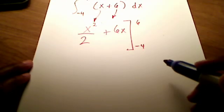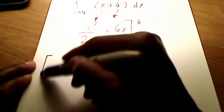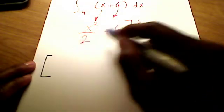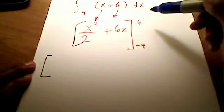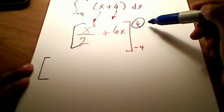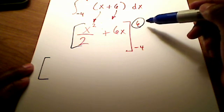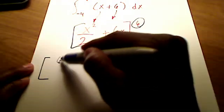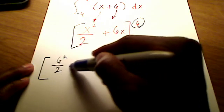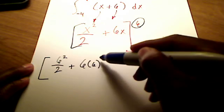And so the fundamental theorem of calculus says you're going to have two quantities, and you're going to take the difference of them. The first quantity is take your antiderivative and plug in a 6, x, the upper limit here, this upper integral. You're going to plug in a 6 everywhere you see an x. So that's just 6²/2 plus 6 times 6.